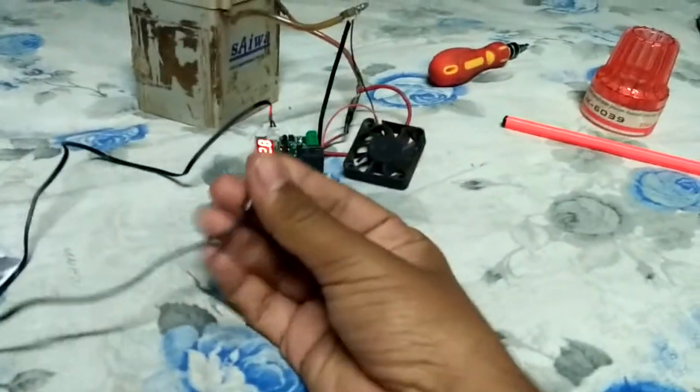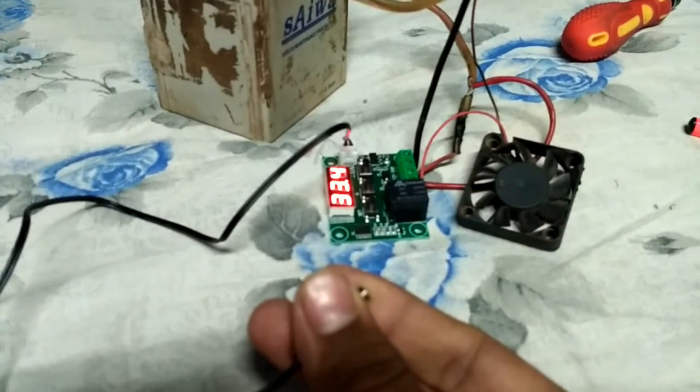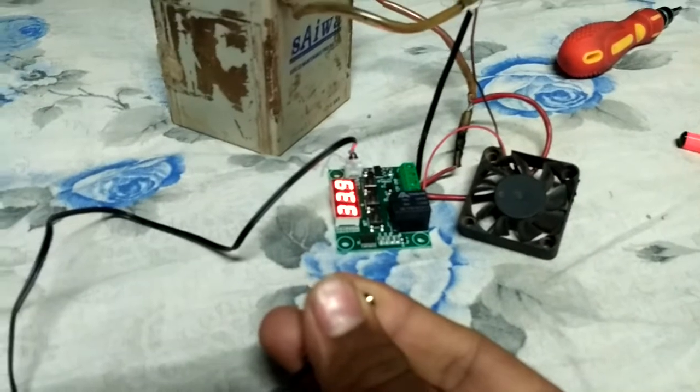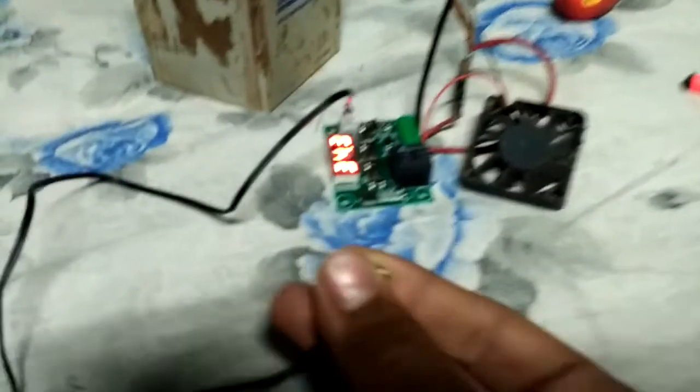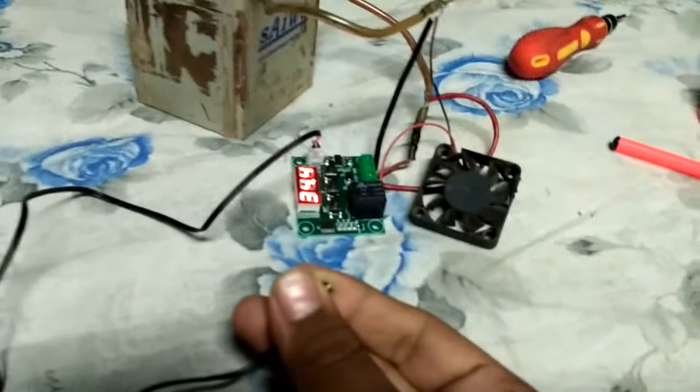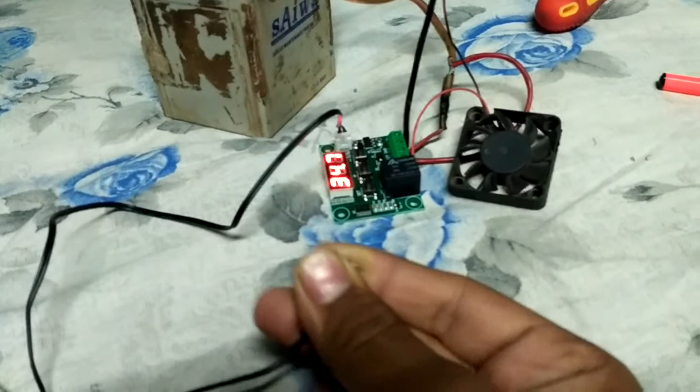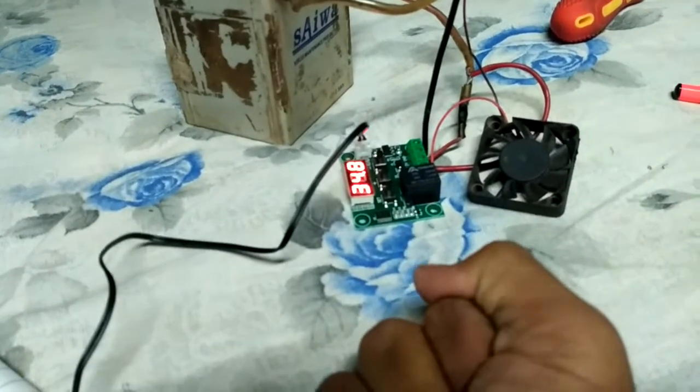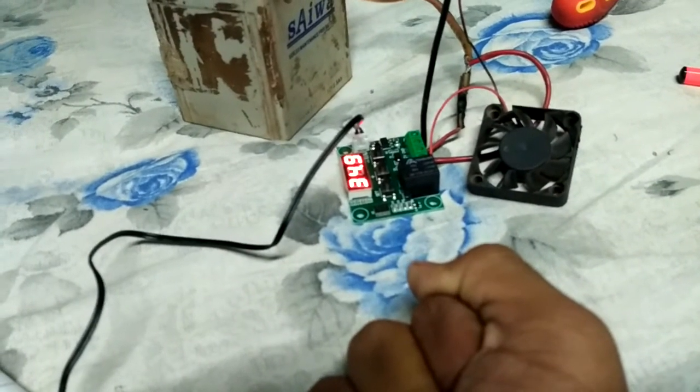And as I give heat, we have set it to 34. So as the temperature rises 2 degrees, means from 34 to 36, the fan will automatically switch on at 36 degrees Celsius. Just you have to wait and see. To provide more heat I have packed it in my hand. The temperature is rising.